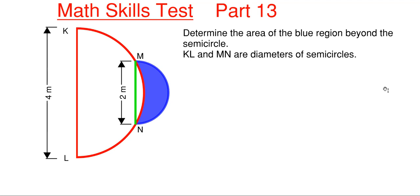So this will be our 13th part in the series and what we have going on here is that we have to determine the area of the blue region beyond the semicircle. We're also told that KL and MN are diameters of semicircles. So our semicircle from M to N has a diameter of two meters and then the semicircle shown in red here from K to L is four meters in diameter.